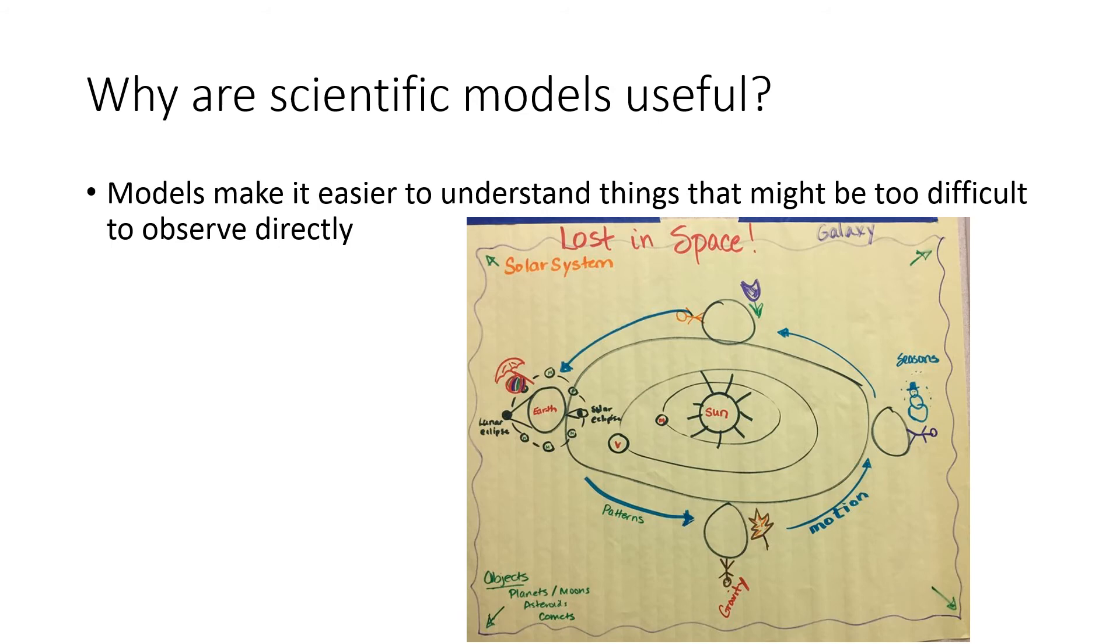We will be spending considerable time creating scientific models. Scientific models make it easier to understand things that might be too difficult to observe directly. Here's a model of our solar system. It's a drawing, a pretty basic model that you yourself may have actually made in the past. Models can also take the form of being mental models, a physical 3D model, or a mathematical model. Regardless of the nature of the model, this course puts a pretty strong emphasis on model making and using models to help answer questions.